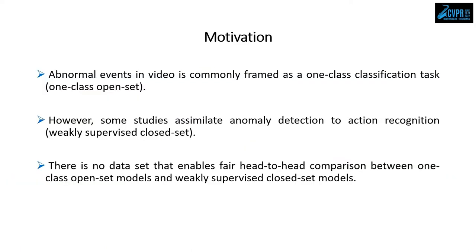In the literature, there are two distinct formulations to deal with the difficulty of the video anomaly detection task. The first is the one-class classification task where training videos contain only normal events while test videos contain both normal and abnormal events. The second is the weakly supervised action recognition task where training videos contain both normal and abnormal events, but annotation is provided at the video level. To date, there is no dataset that contains abnormal events in the training set which are disjoint from the test set, which would enable a fair head-to-head comparison between the two formulations.